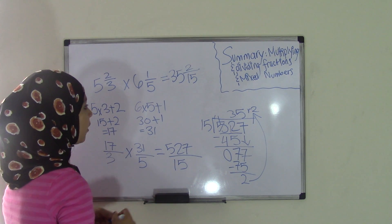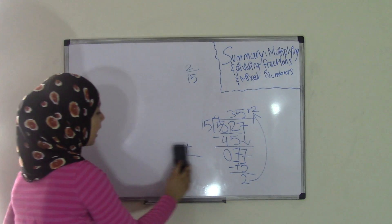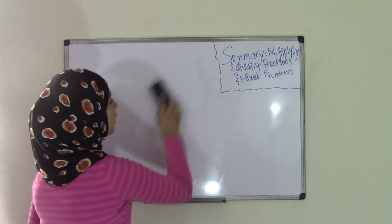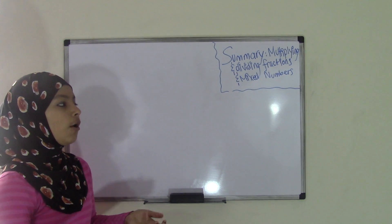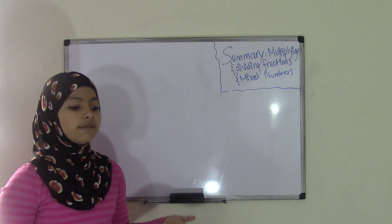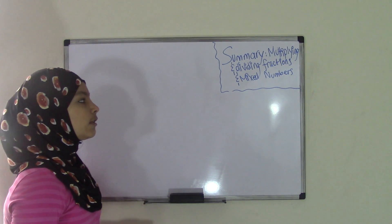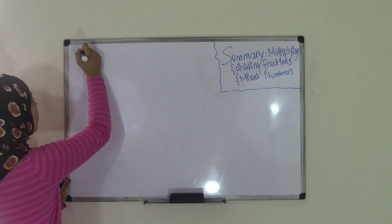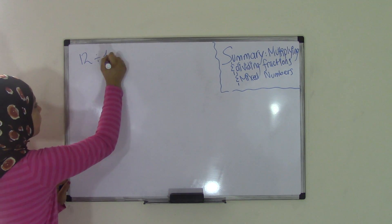Now we're done with the multiplication part. What if we have a division problem — specifically dividing a whole number by a unit fraction? A unit fraction is any fraction with a numerator of 1, such as 1/5, 1/2, 1/3, or 1/16. For instance, we could have 12 divided by 1/4.